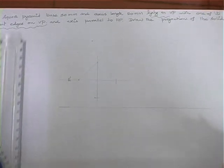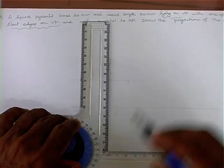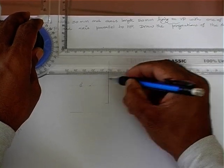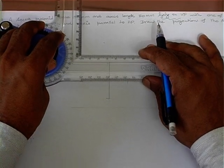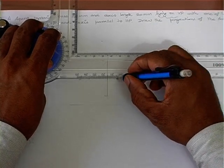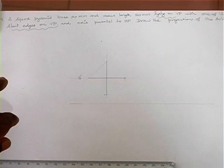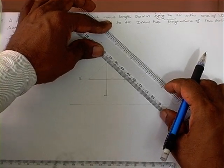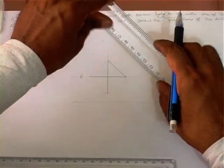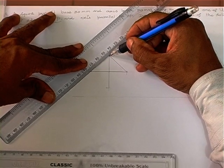Square in corner position simply means the line joining the corner and the center of the plane must be parallel to the XY line. Here is the center of the plane; here is one corner and another corner. Take any corner and join it with the center — it should be strictly parallel to XY. This gives the square in corner position. A square is a polygon with four equal sides and all angles 90 degrees, which we must not violate.